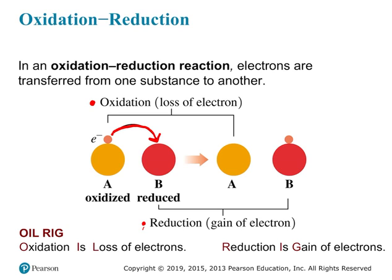This can be a little hard to remember, so there are acronyms to help. The first is OIL RIG: Oxidation Is Loss, Reduction Is Gain. Another one is 'Leo the Lion says GER': Loss of Electrons is oxidation, Gain of Electrons is Reduction. Use whichever works best for you.